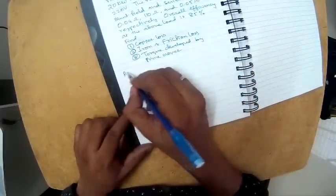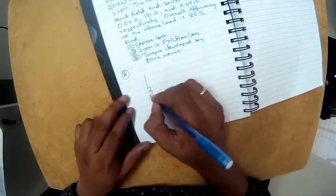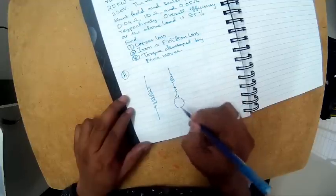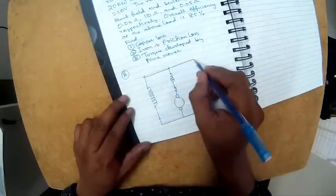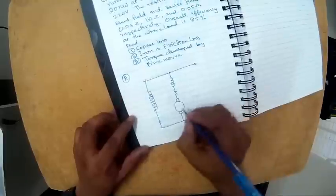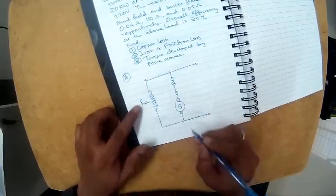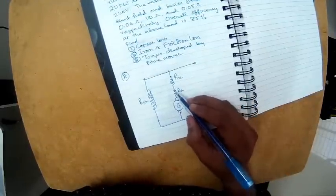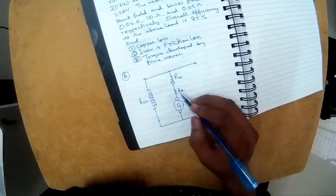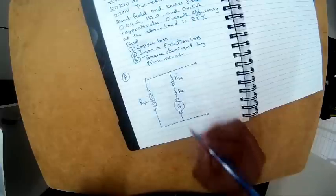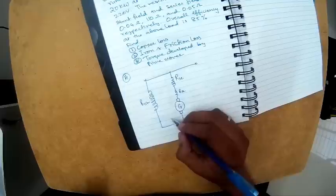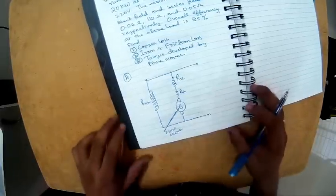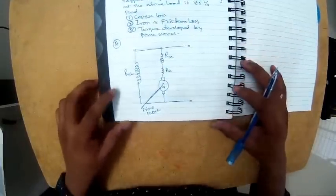Let me draw the circuit diagram of a long shunt DC generator. In a long shunt, the shunt winding is in parallel with the series winding and armature. The input is mechanical and the output is electrical, so this is a generator. This is the field winding — RSH is the resistance of the shunt field winding, RSE is the resistance of the series field winding, and RA is the resistance of the armature. These are the brushes, and there is a prime mover providing mechanical input.